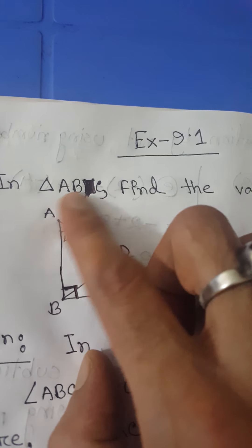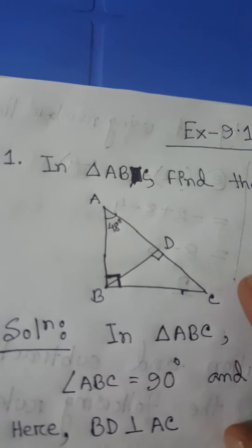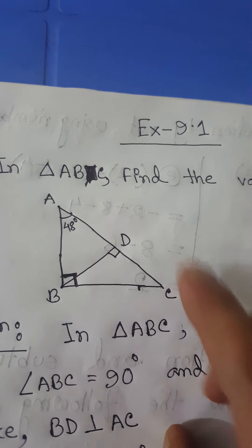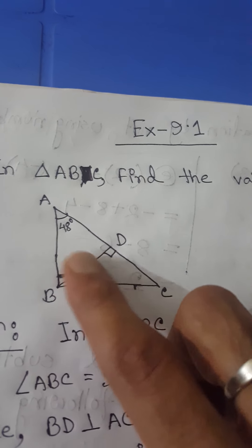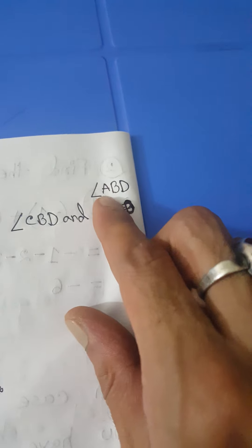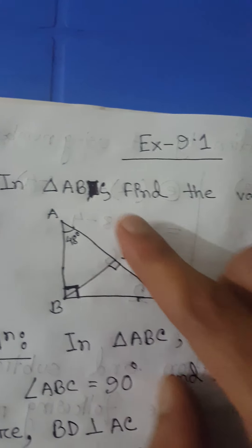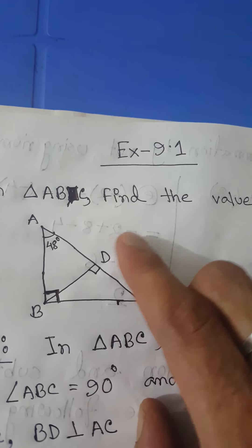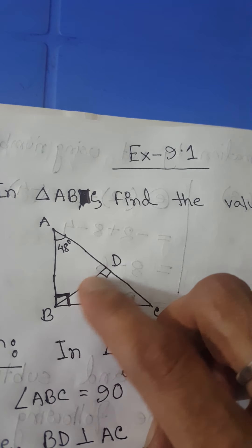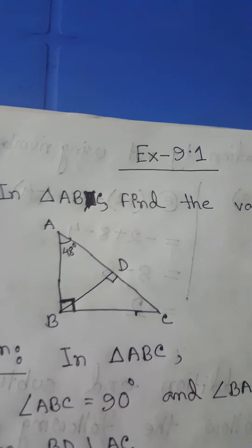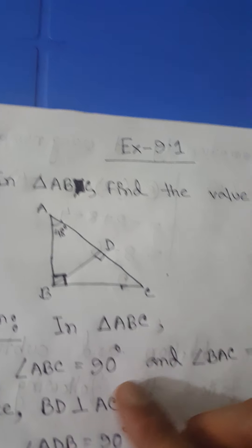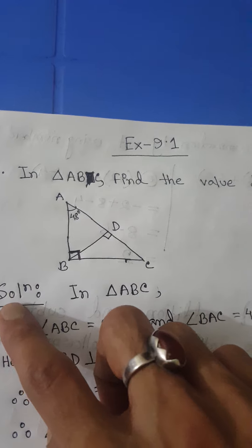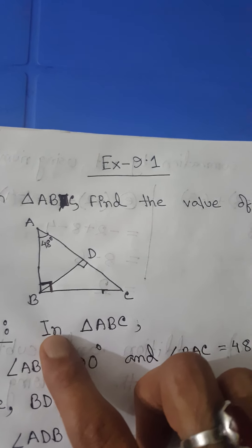We have been given triangle ABC. In this triangle ABC, we have to find the value of angle CBD — where B is the middle angle — and the other angle is angle ABD. So we have to find these two angles in this figure.